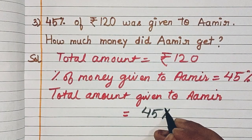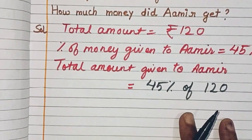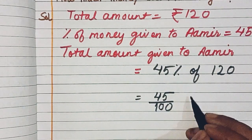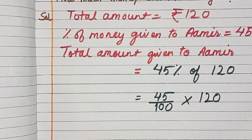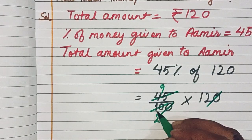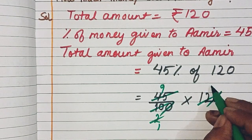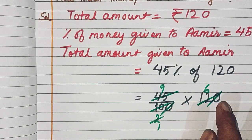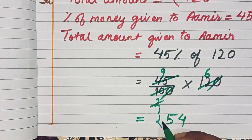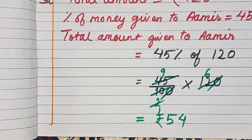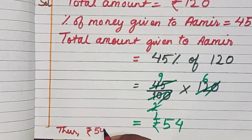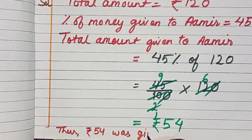45% of 120 — we write 45 upon 100 multiplied by 120. Now reduce: the zero from 120 and the zero from 100 cancel. Then reduce 45 and 12 — 5 nines are 45, 5 twos are 10, so both reduce by 5. Then 2 ones are 2 and 2 sixes are 12; bottom becomes 1. So we have 9 × 6 = 54. Thus Rs. 54 was given to Amir.